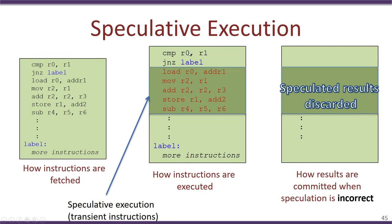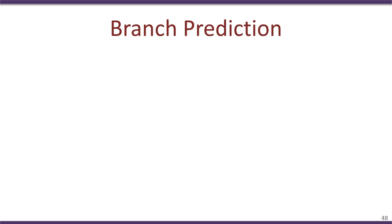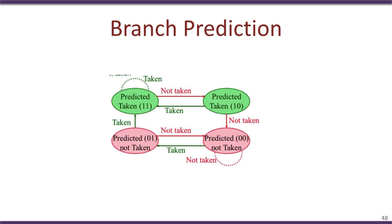Processors try to predict what the result of a compare instruction would be, and speculatively execute either the code following the jump-on-no-zero instruction or the code following the label, depending on what they predict. To achieve this, what is added to the processor is something known as branch prediction logic.